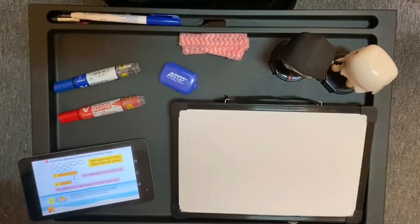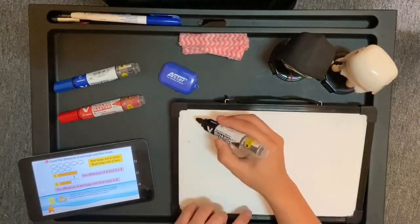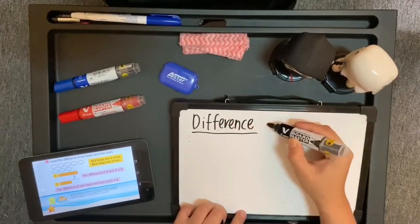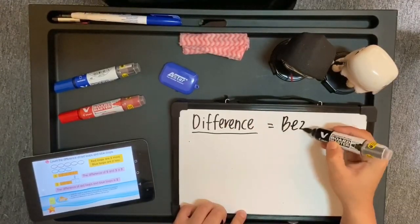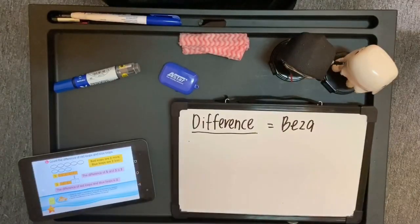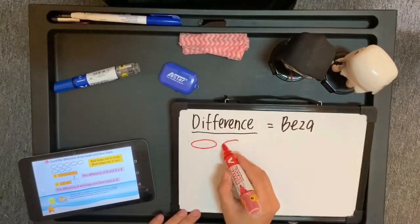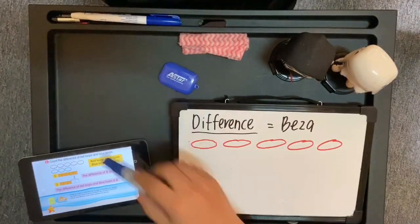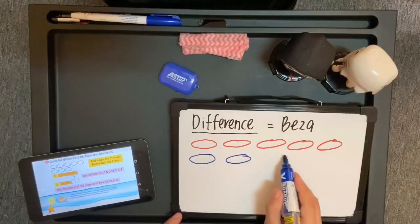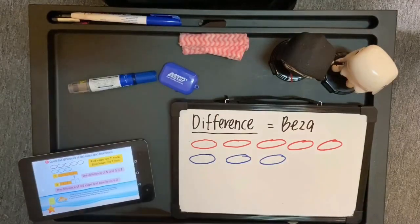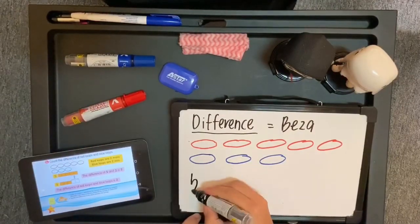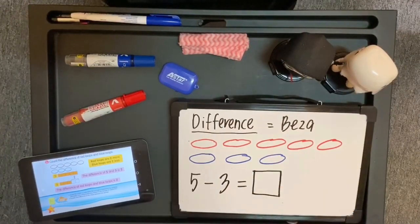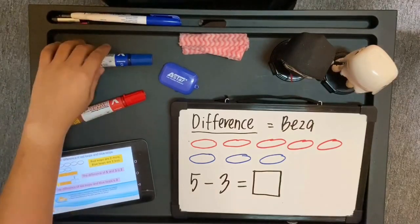Count the difference of red loops and blue loops. Different ni pun merujuk kepada soalan tolak, iaitu cari perbezaan. Dalam contoh ni, perbezaan antara loops merah — gelong merah yang ada 5 — manakala gelong biru pula ada 3. Jadi, kalau dalam ayat matematik, 5 tolak 3 sama dengan berapa? 5 di depan kerana 5 adalah nombor besar.